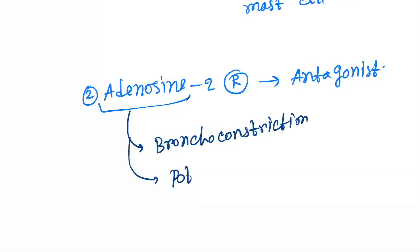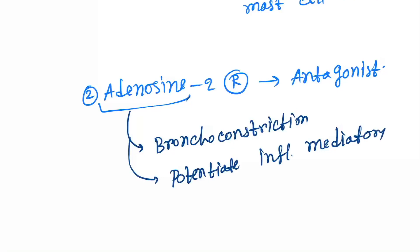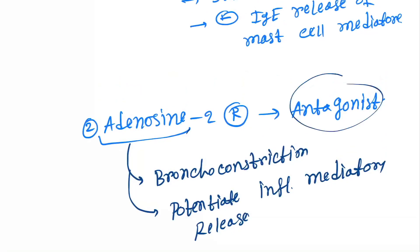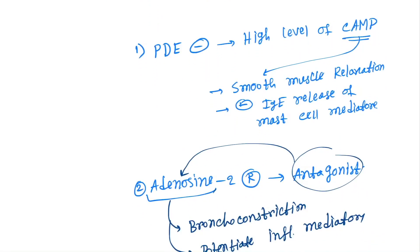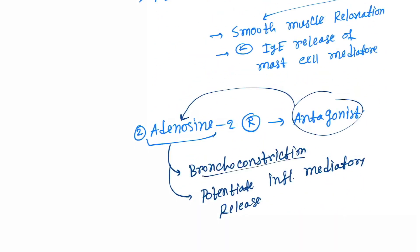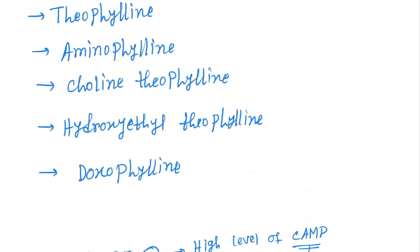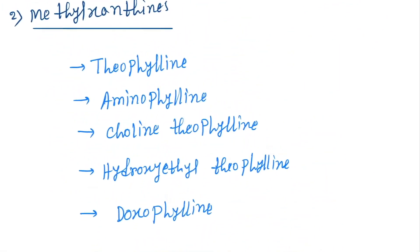Adenosine also potentiates inflammatory mediator release. The antagonist drugs act directly on these receptors so adenosine is no longer able to bind, and bronchoconstriction along with inflammatory mediator release will be inhibited.